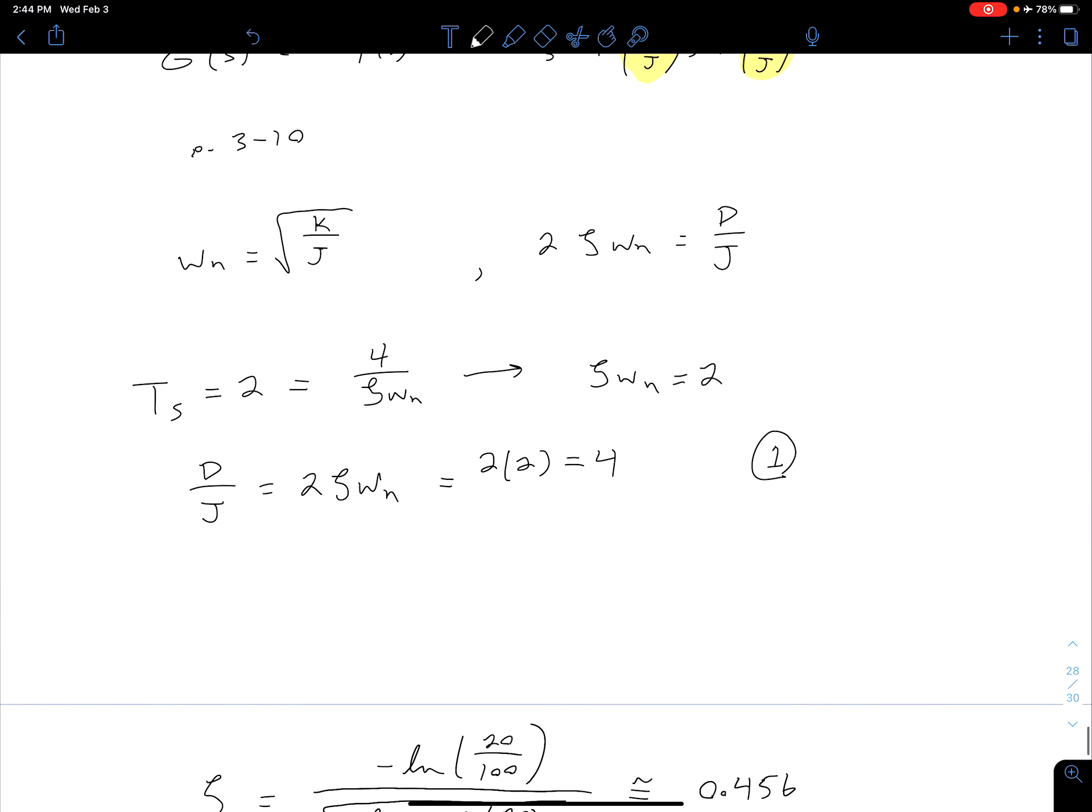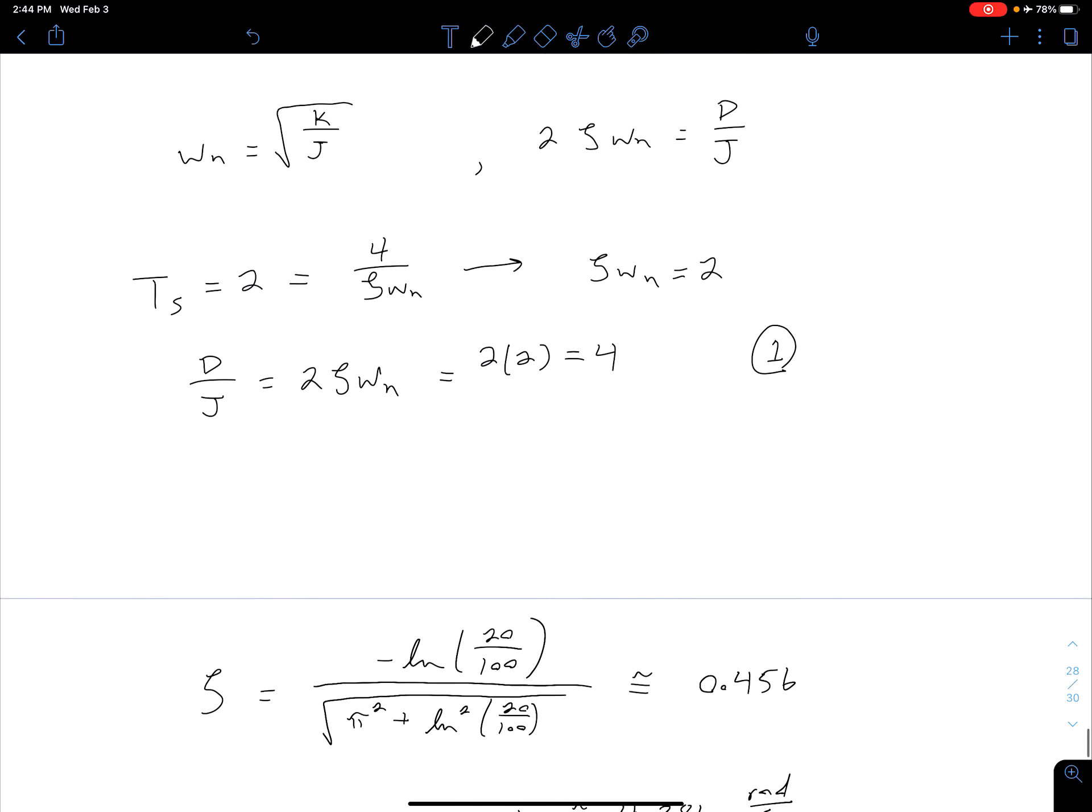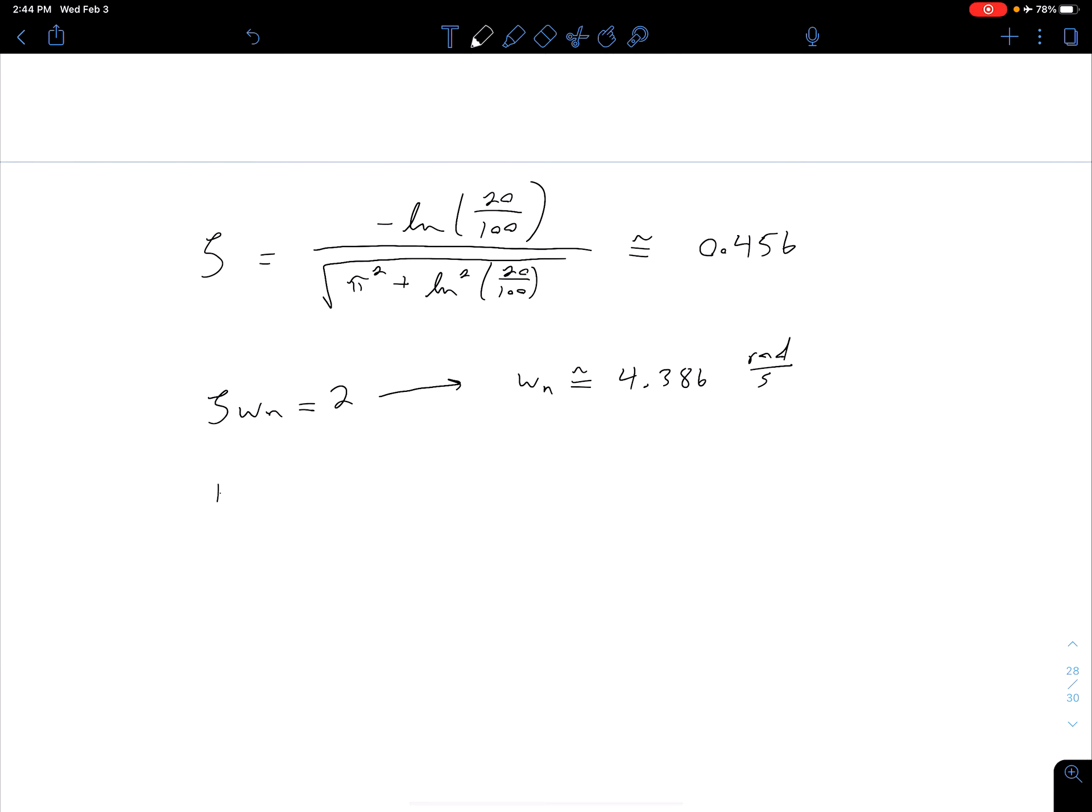So now that we know our omega_n we can come back to this equation and relate that to our K and J. We can say K/J is equal to omega_n squared. So just slightly adjusted that equation that we had written previously. And so that's approximately this 4.386 squared which gives us about 19.241. Let's call that equation 2.